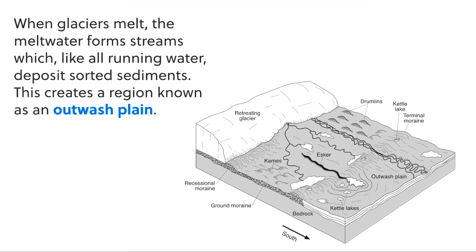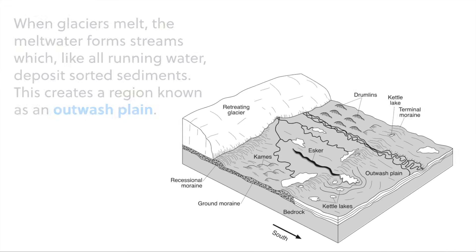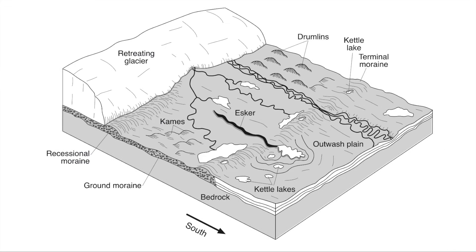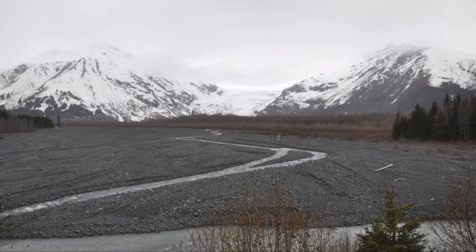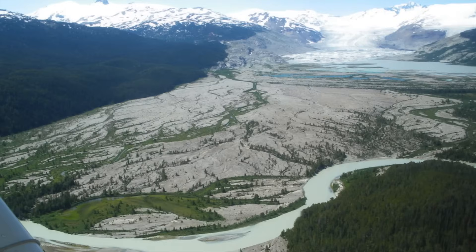But when we have outwash — when water has become liquid and melted, creating streams — then we end up with sorted sediments. You can see that in this diagram here. This is an outwash plain, so all of these sediments were deposited by runoff from melting glaciers.